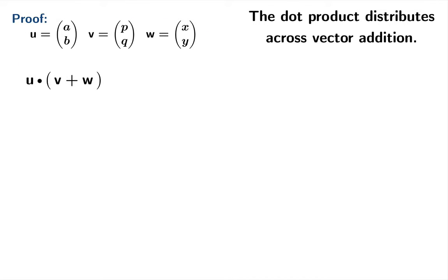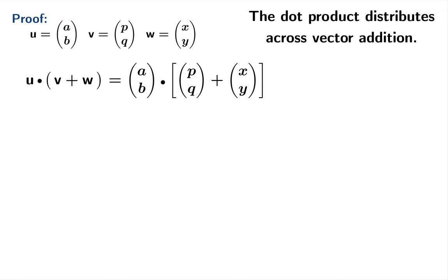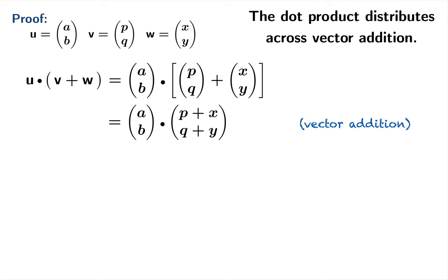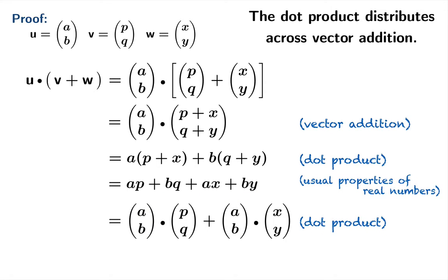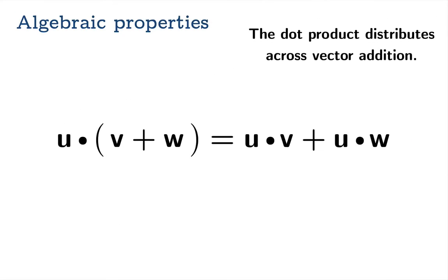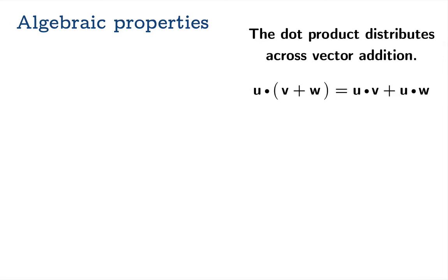Let's see what you get when you take u and dot it into the sum of v and w. We'll fill in all the components and perform our vector addition first. Now we're in a position to apply the dot product, and here we've reduced it to just the usual operations on real numbers. We can mix things around with commutativity and associativity, recognize the dot products, and see that we obtain u dot v and u dot w. So indeed u dot (v plus w) is the same as u dot v plus u dot w — the dot product distributes across vector addition.